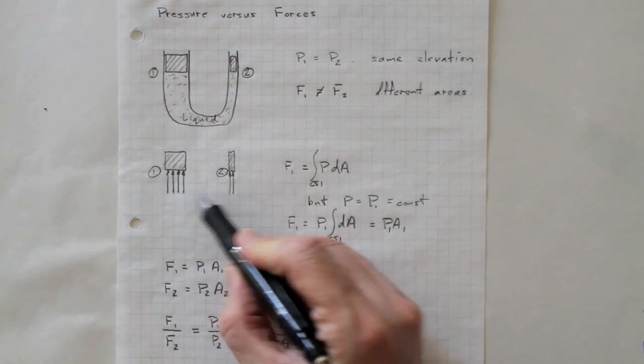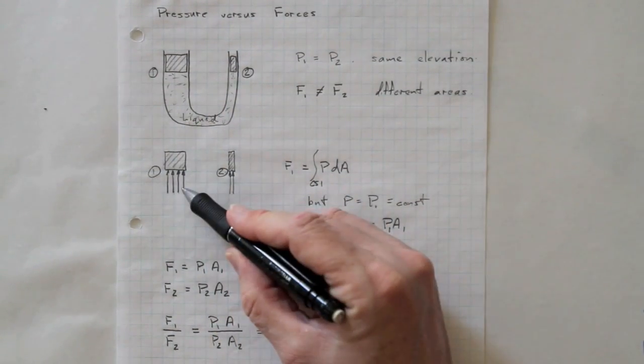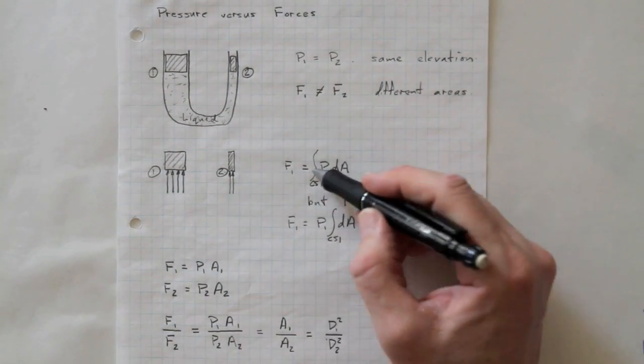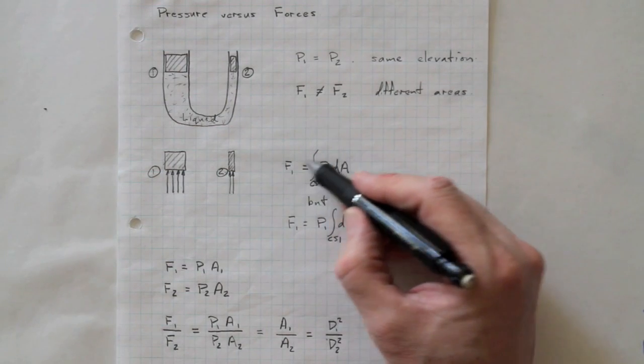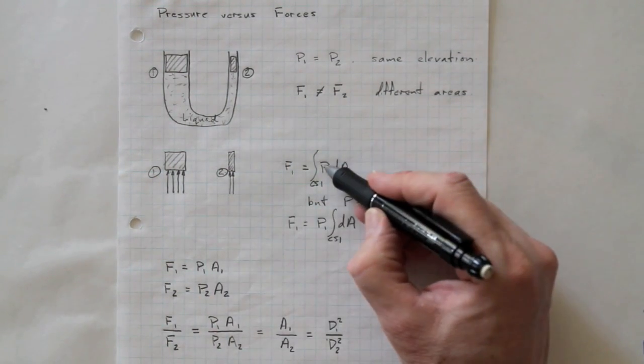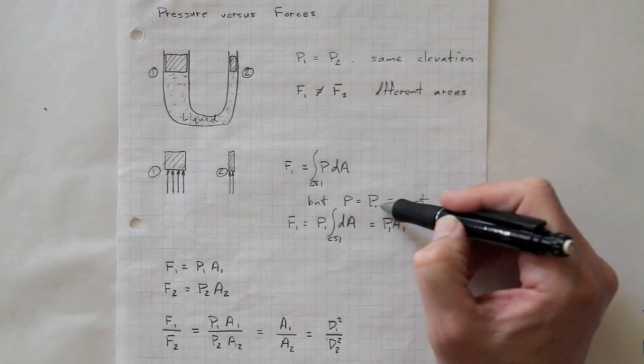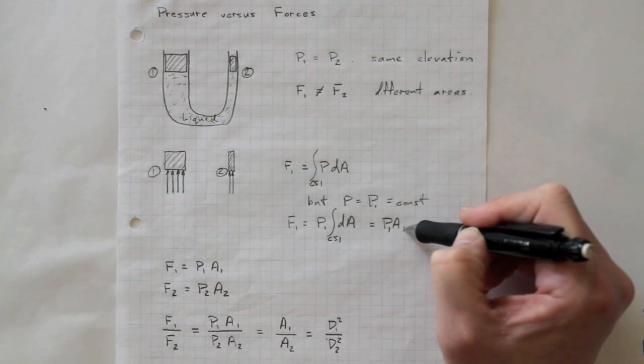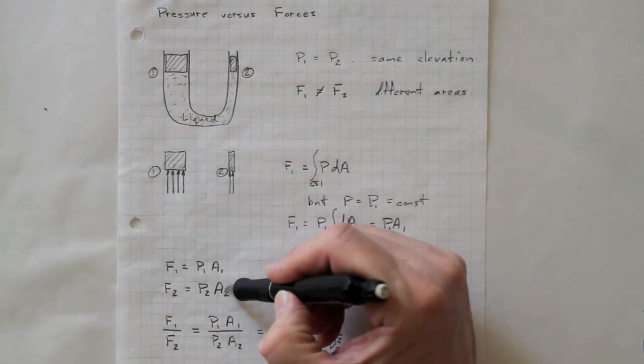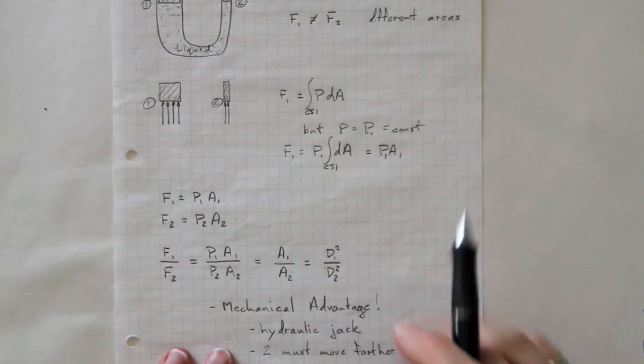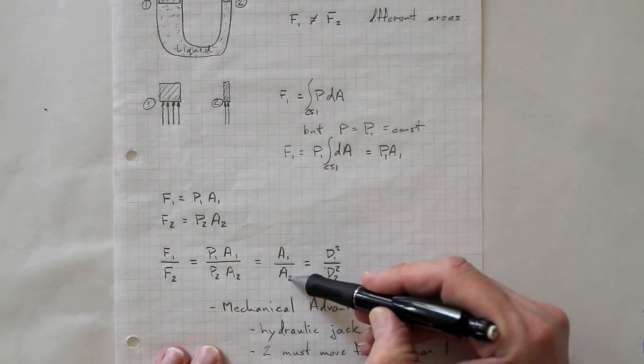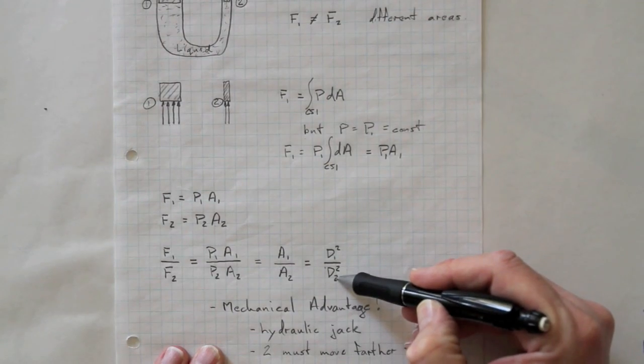We can see that illustrated schematically here. Same pressure over a small area and over a large area. F1 is a larger force. So F1 integral over control surface 1 of PDA. And if it's a constant, it's just P1 A1. Likewise, F2 is P2 A2. So the ratio between the forces is the ratio of the areas or the ratios of the diameters squared.